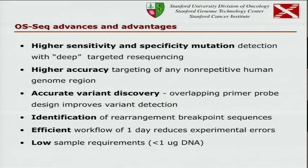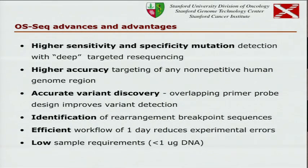This method works on fresh DNA from flash-frozen tissue and has quite a few advantages. For us in the lab it's a very efficient workflow — a lot easier than exome capture. Low sample requirements: we can start with sub-nanogram quantities of DNA. We have high sensitivity and specificity because we have very high depth on the regions we are targeting. One application is validation, but you could also use it for discovery if you have a long list of candidate genes.